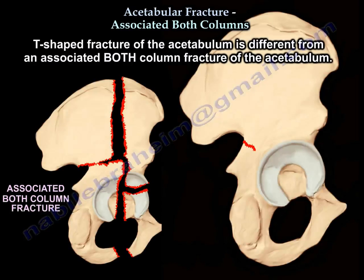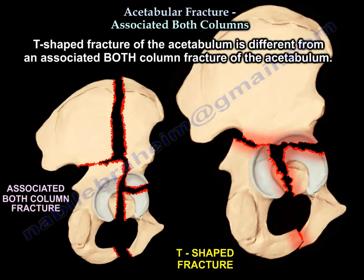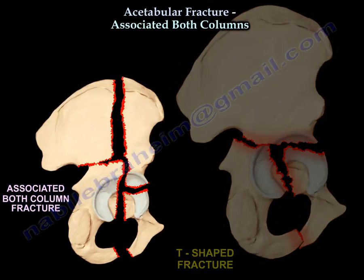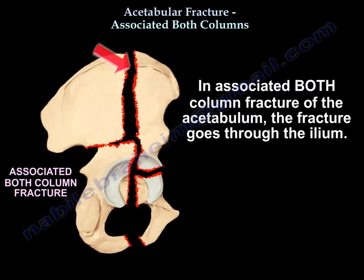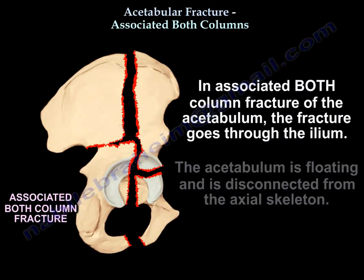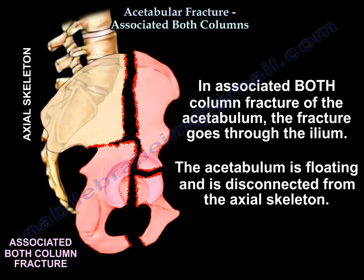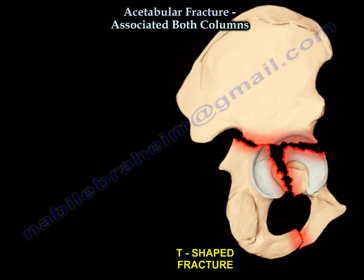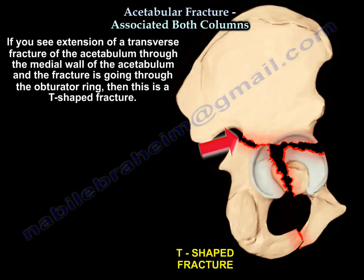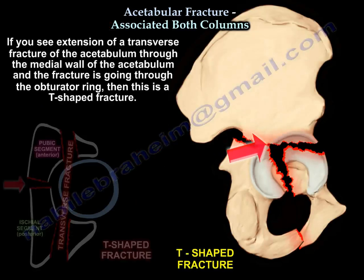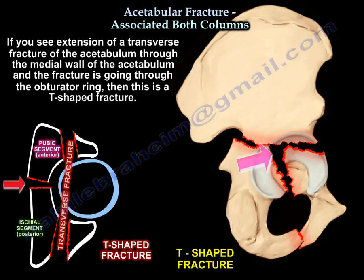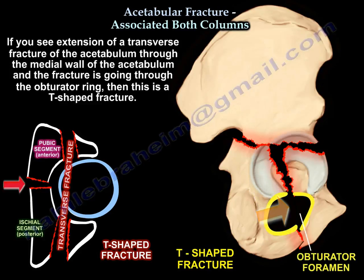A T-shaped fracture of the acetabulum is different from an associated both column fracture. In an associated both column fracture, the fracture goes to the ilium and the acetabulum is floating, disconnected from the axial skeleton. If you see extension of a transverse fracture through the medial wall of the acetabulum and the fracture is going through the obturator ring, then this is a T-shaped fracture.